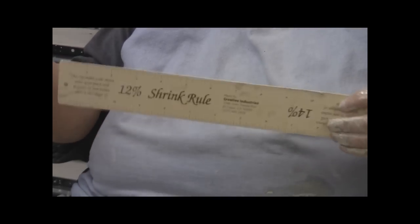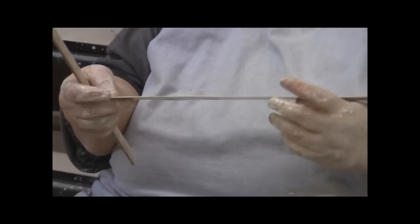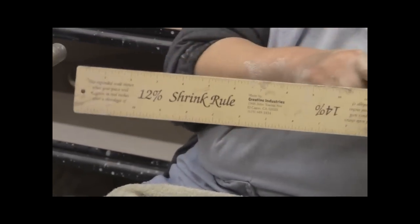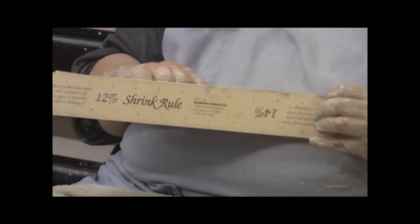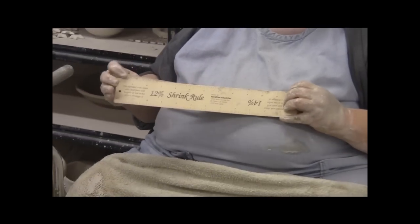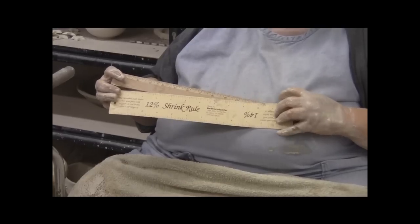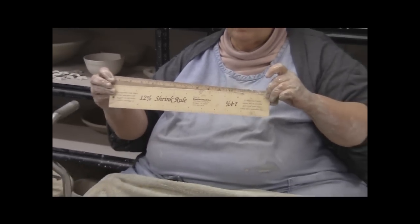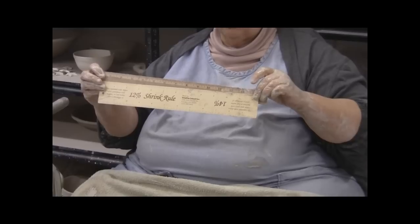Just to demonstrate this so you can see more clearly, this is twelve inches on the shrink ruler. And this is twelve inches on a regular ruler. So it's twelve and a half percent bigger, approximately twelve percent bigger on the shrink ruler.